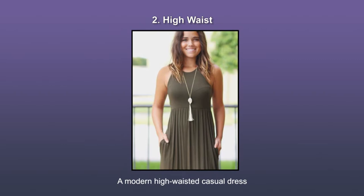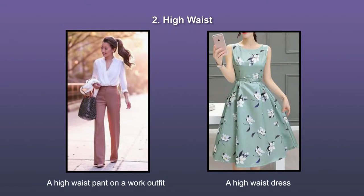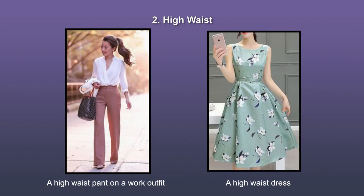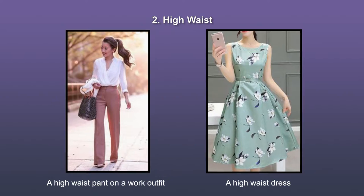What we are seeing here is a modern, high waisted, simple, casual dress. The picture on the left shows a high waisted pant on a work outfit. The picture on the right shows an elegant, casual wear dress with a high waist, and the waist is held by a belt.